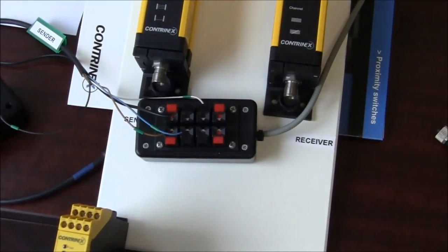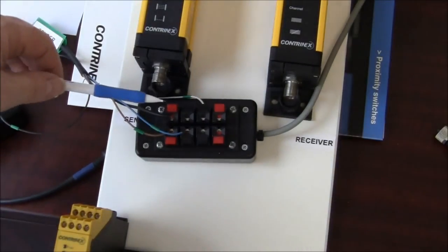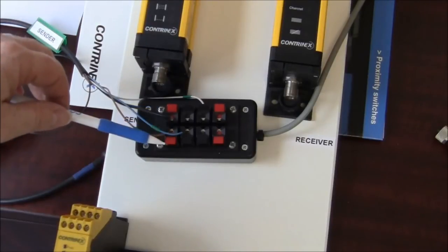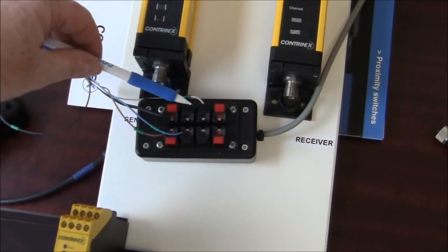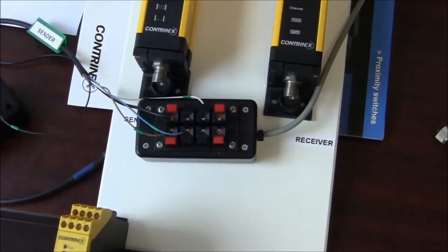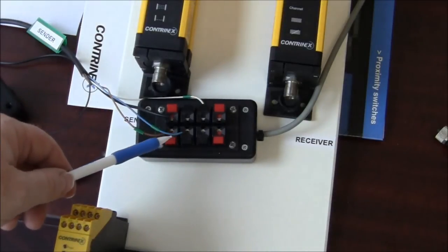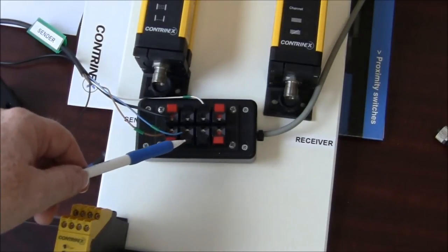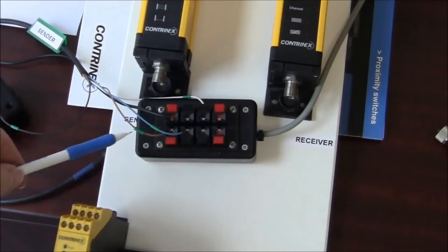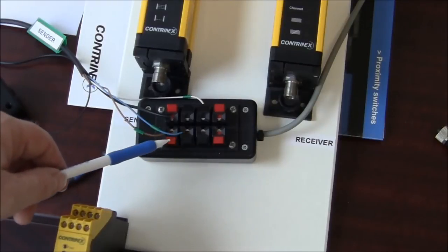Okay, I have a power supply connected to this box. I've got DC positive going to the red terminals and common going to the black terminals. You're going to see that I have the blue wire from the sender connected to DC common and the brown wire connected to DC positive.